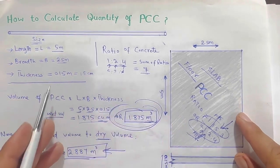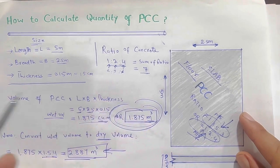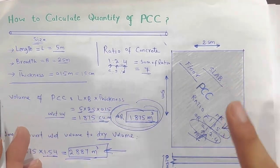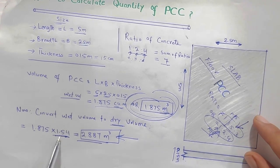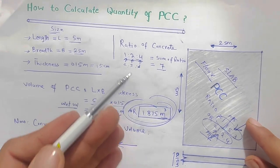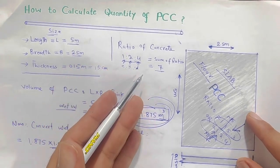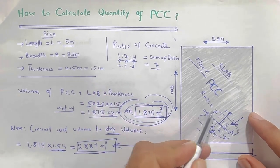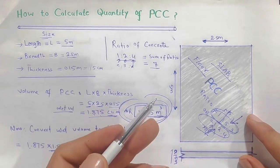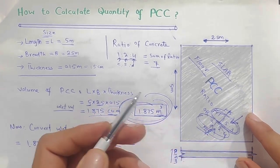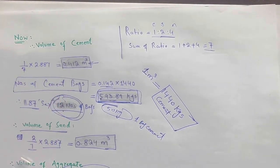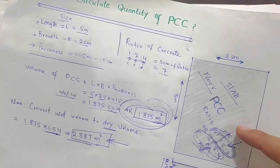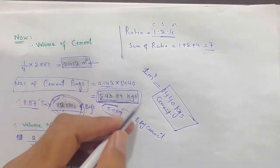This is the same method for any dimensions - maybe you have an RCC slab that is 5 by 6 meter or 7 by 24 meter. First, find the volume, then convert to dry material by multiplying by 1.54, because it increases by 54 percent. Then you need to know the ratio of concrete - if M20 grade, the ratio is 1:1.5:3; if M15, the ratio is 1:2:4. Then find the volume of cement, sand, and aggregate.